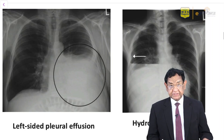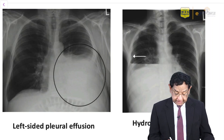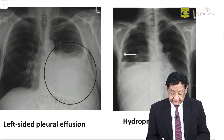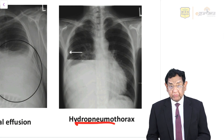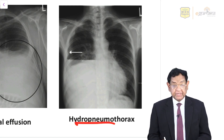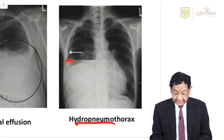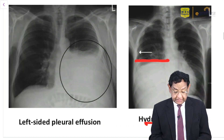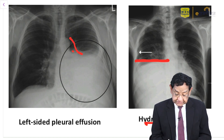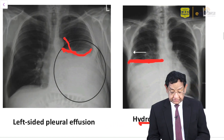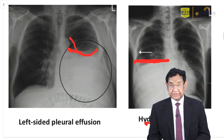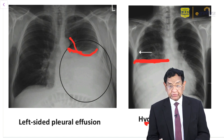Here is a chest X-ray of left pleural effusion alongside a hydropneumothorax. How do we differentiate between the two? When we have a hydropneumothorax, we get a straight line, but with pleural effusion we get a curve — it's not straight. This is all because of the effect of gravity. A beautiful picture to differentiate between pleural effusion and hydropneumothorax.